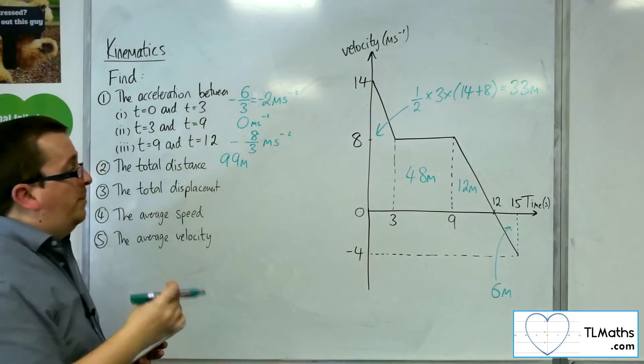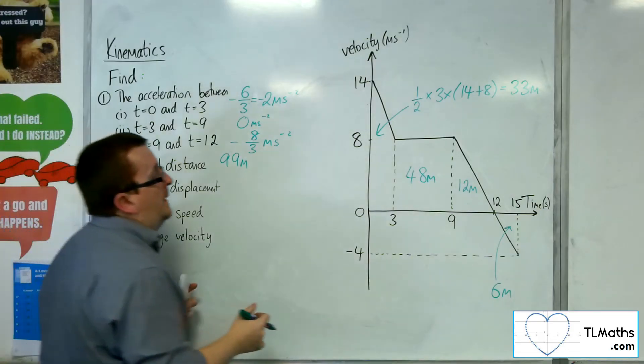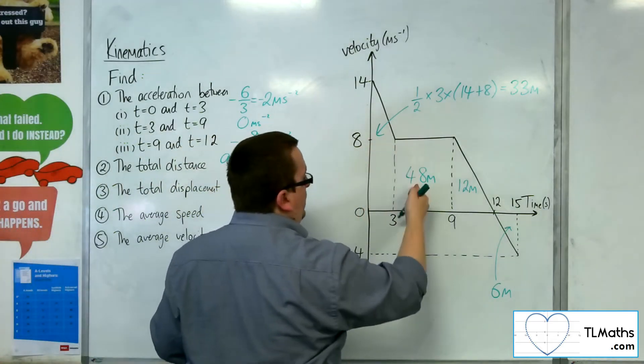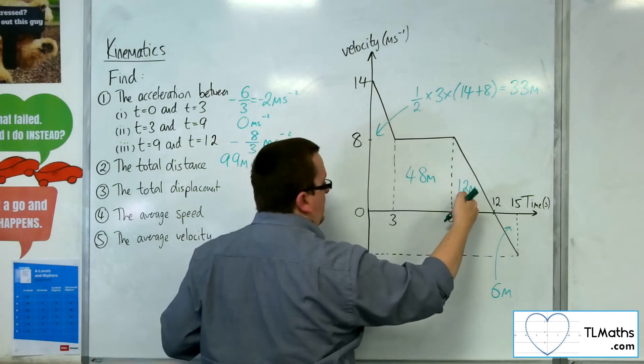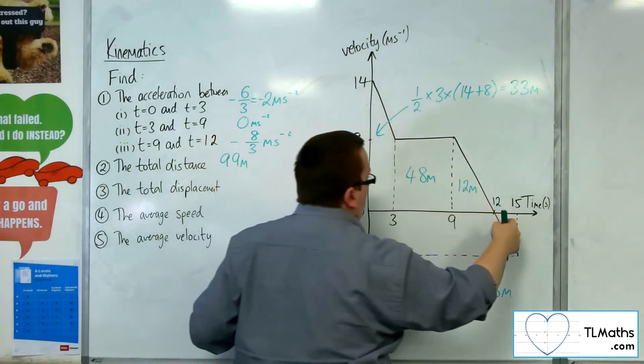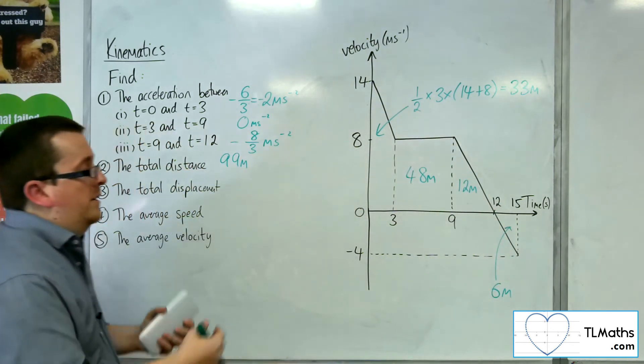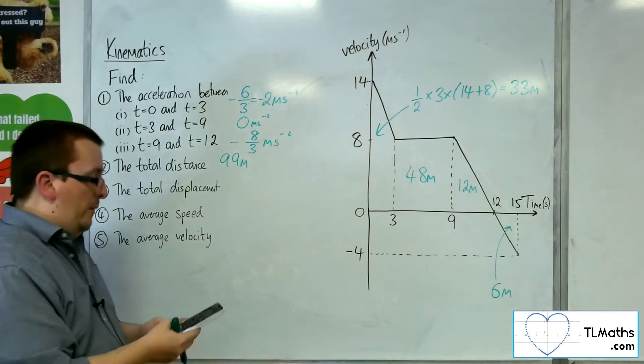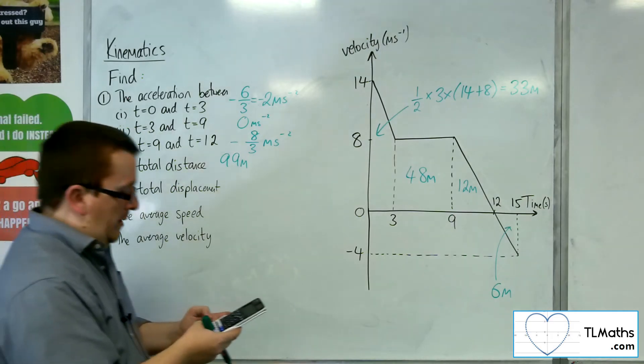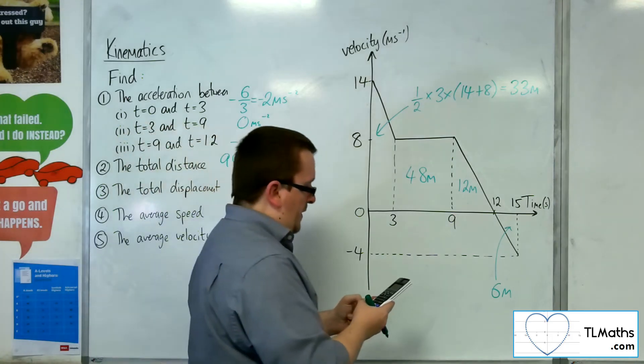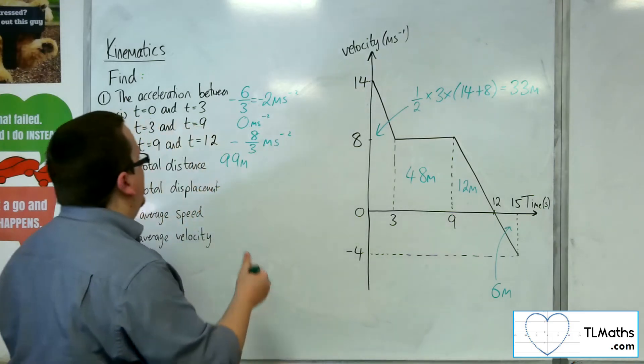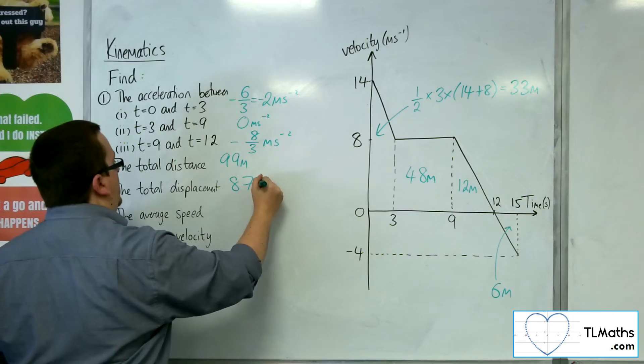The total displacement then is the 33 plus the 48 plus the 12, but then we want to take away the 6, because that brings us back closer to where we started. So we've got the 33 plus the 48 plus the 12, take the 6, which leaves us with 87 metres.